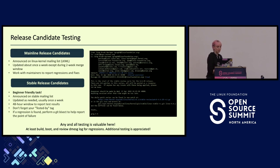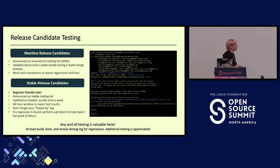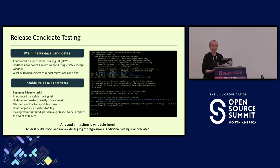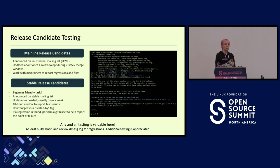The next opportunity for getting involved is doing release candidate testing — testing kernels before they're released. There are two opportunities. The first is the mainline release, announced on the Linux kernel mailing list. These are the kernels before they become stable, so you'll more than likely run into more issues. It's a great spot if you want to find problems and help fix and debug them. If you want something safer to get used to testing and sending emails on the mailing list, helping test stable release candidates is a really great spot to start.